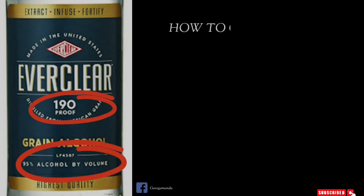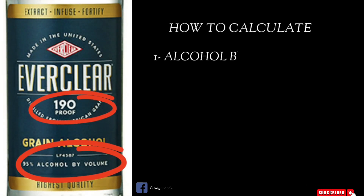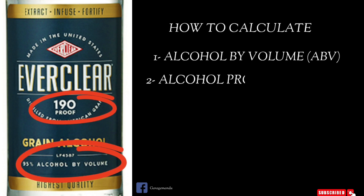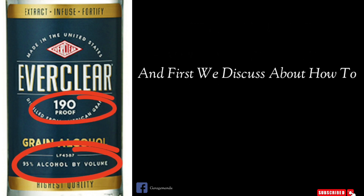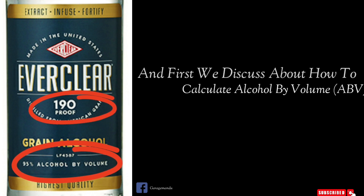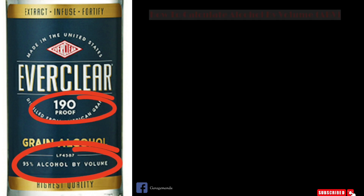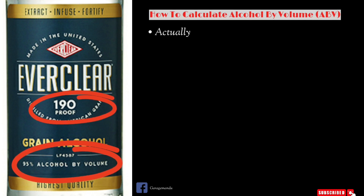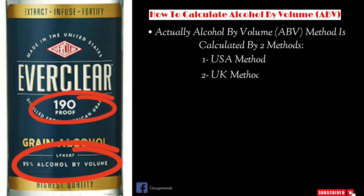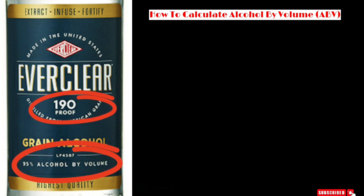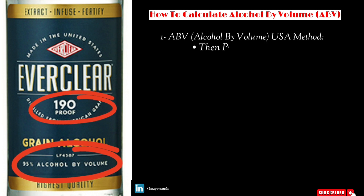It is very important to know how to calculate alcohol by volume and alcohol proof. First, we discuss alcohol by volume. The alcohol by volume method can be calculated by two methods: the USA method and the UK method. In the USA method, proof is divided by two.